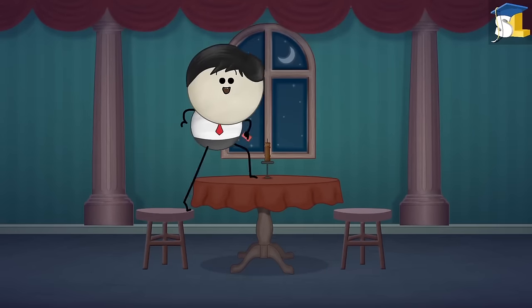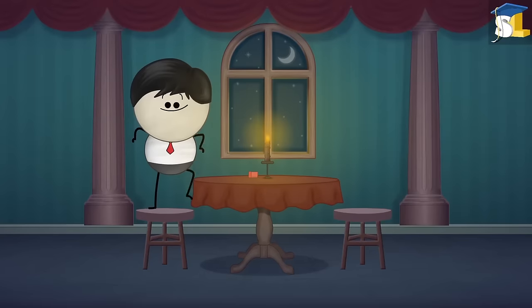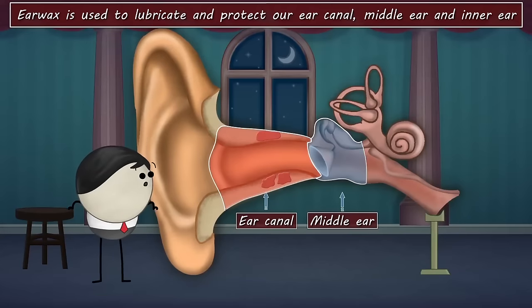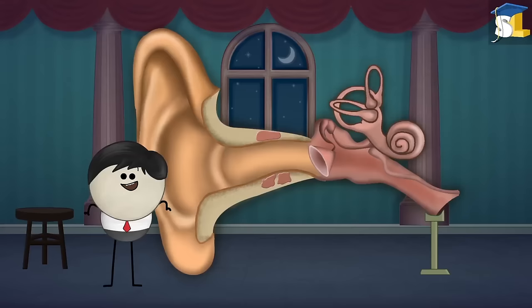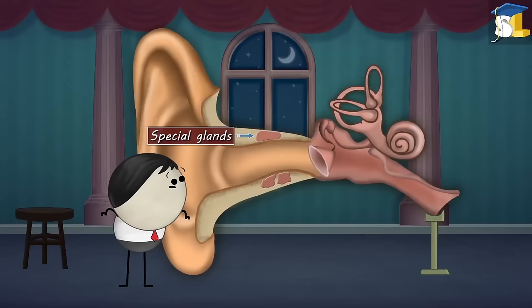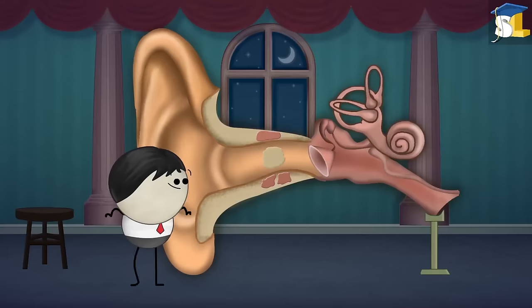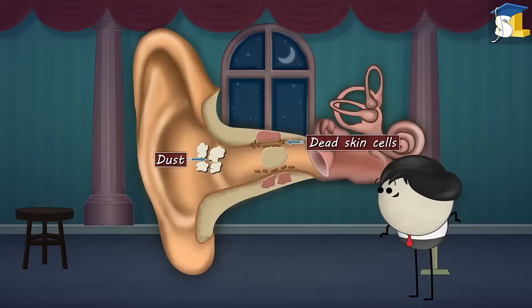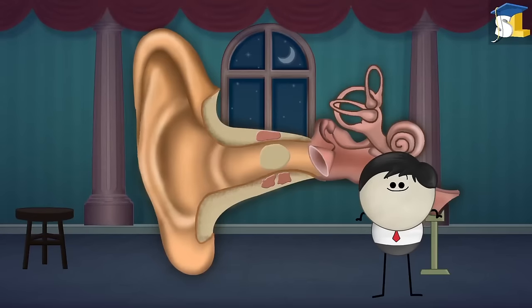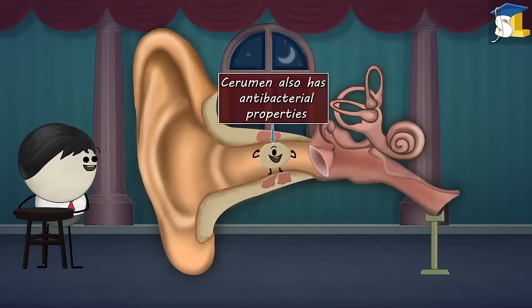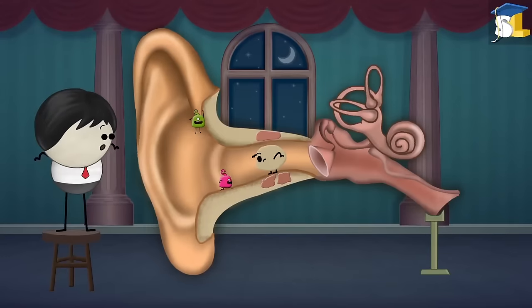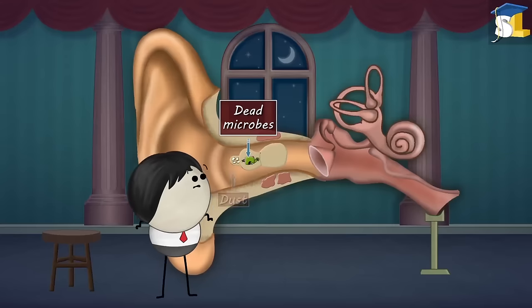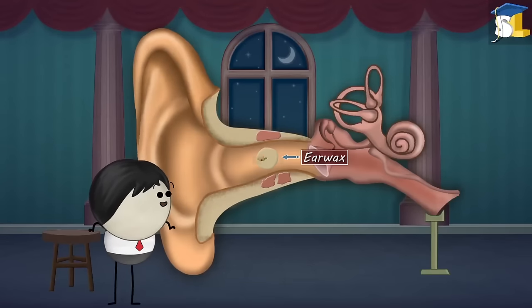What is earwax? Earwax is used to lubricate and protect our ear canal, middle ear and inner ear. Our ear canal consists of special glands that produce an oily and waxy substance called cerumen. Cerumen moisturizes our ears and traps dust and dead skin cells, keeping our ears clean. Cerumen also has antibacterial properties — when harmful microbes try to enter deeper into our ears, the cerumen traps and kills the microbes. These dead microbes, dust, oil and dead skin cells together form the earwax.